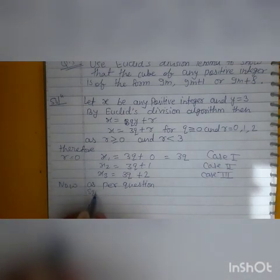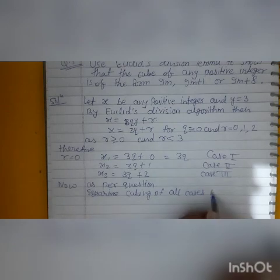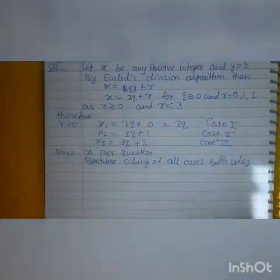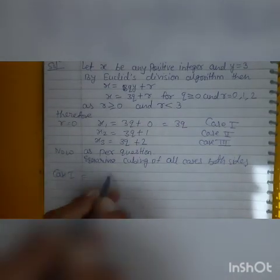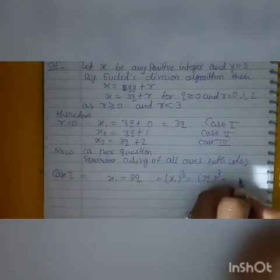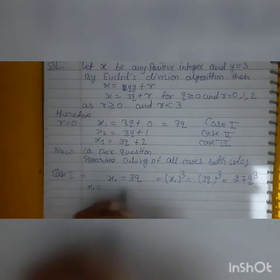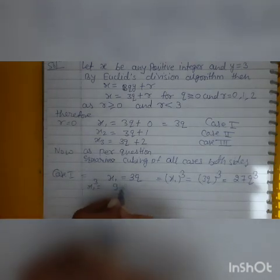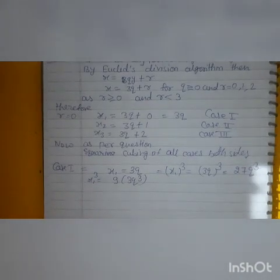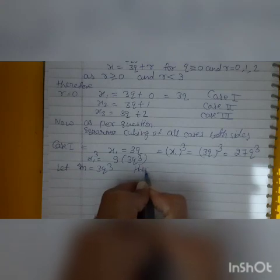As per question, cubing in all cases on both sides. Now if you want to make this Case 1, x1 is equal to 3q. We take this cube, 3 cube q cube, this will be 3 times 3 times 3, 9 times 3, 27q cube. Now what do we do? x1 is equal to 27q cube. x1 cube is equal to 9 times 3q cube. So let 3q cube m is equal to 3q cube, then x1 cube is equal to 9m, equation number 1.